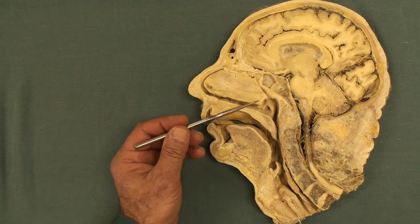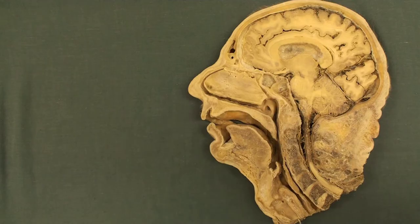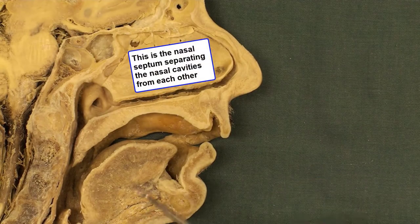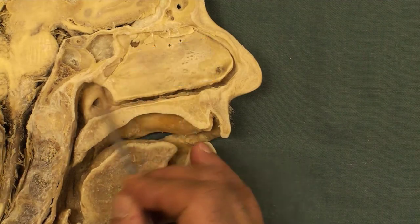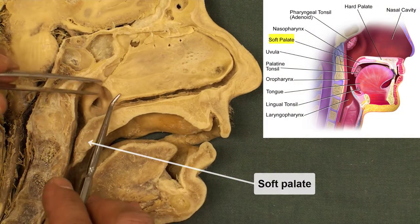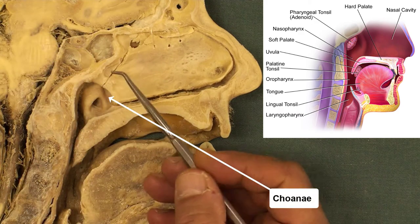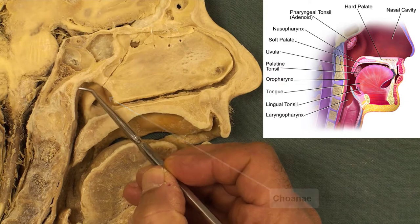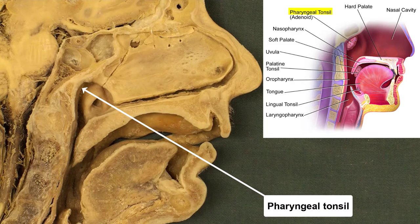Let's zoom in and look at a close-up of the nasopharynx. The nasopharynx is located behind the nasal cavity, extending from the base of the skull to the soft palate. Anteriorly it is connected to the nasal cavity through the choana. On the roof of the nasopharynx, we have an aggregation of lymphoid tissue under the mucous membrane known as the pharyngeal tonsil.